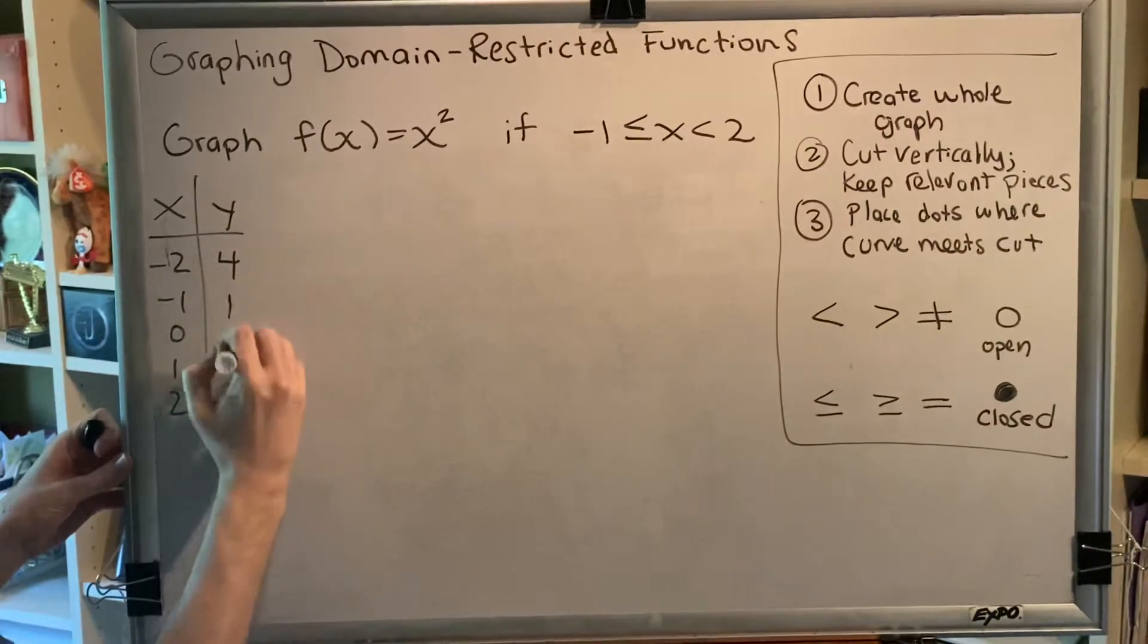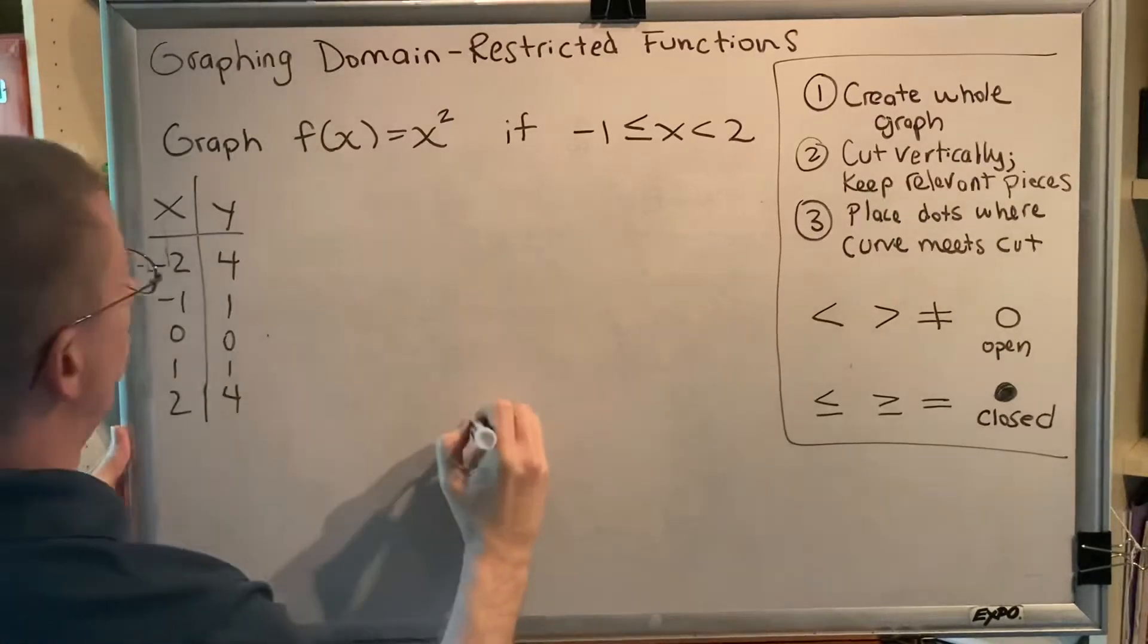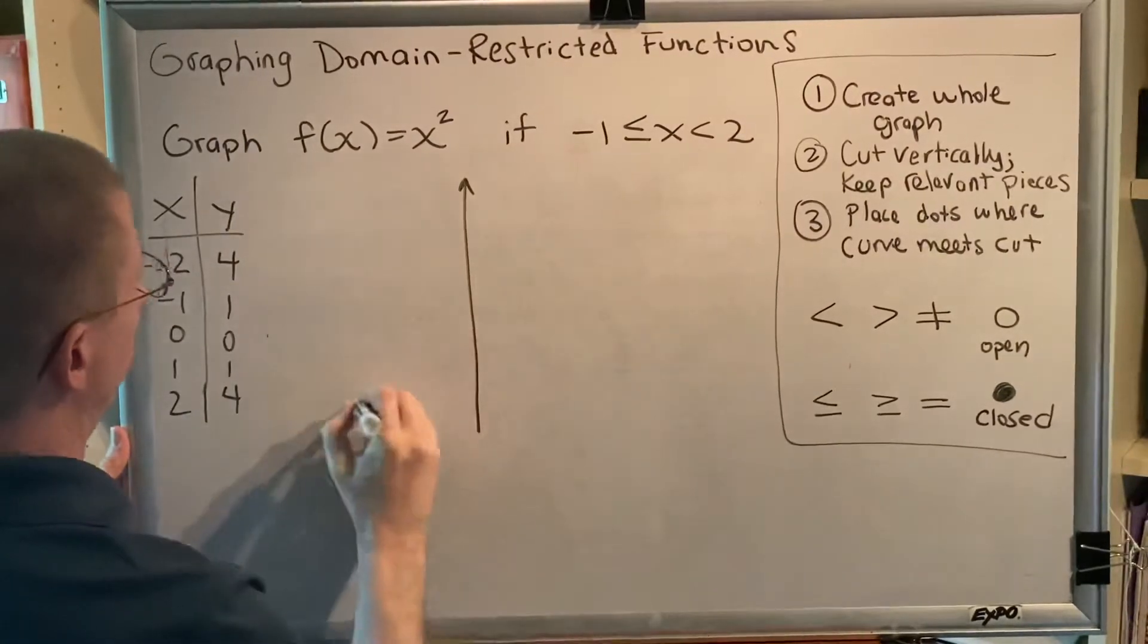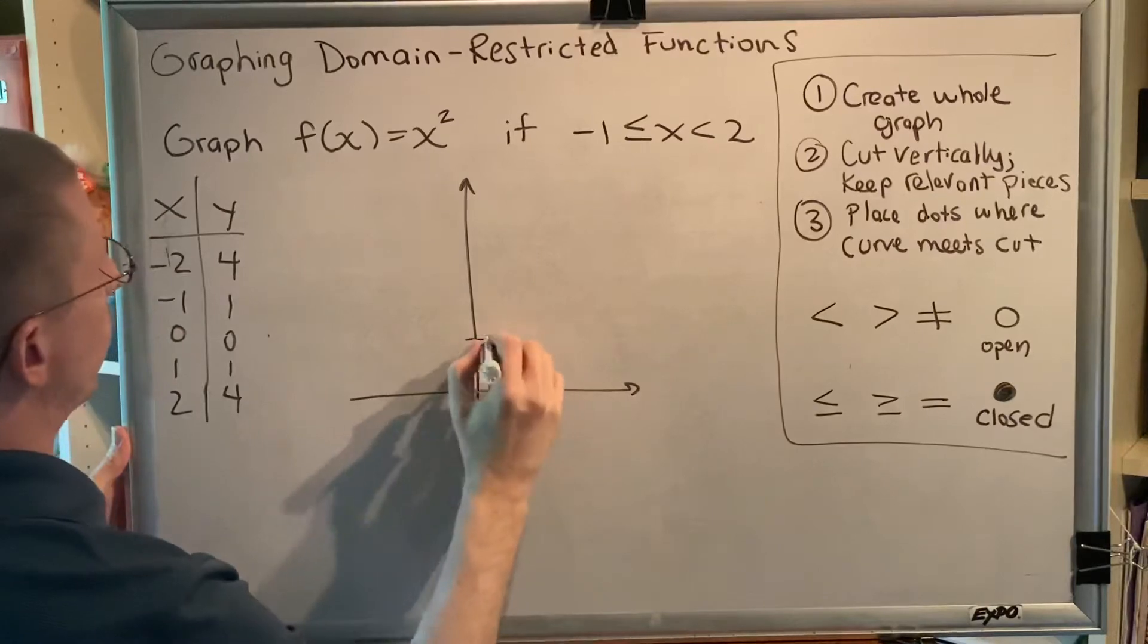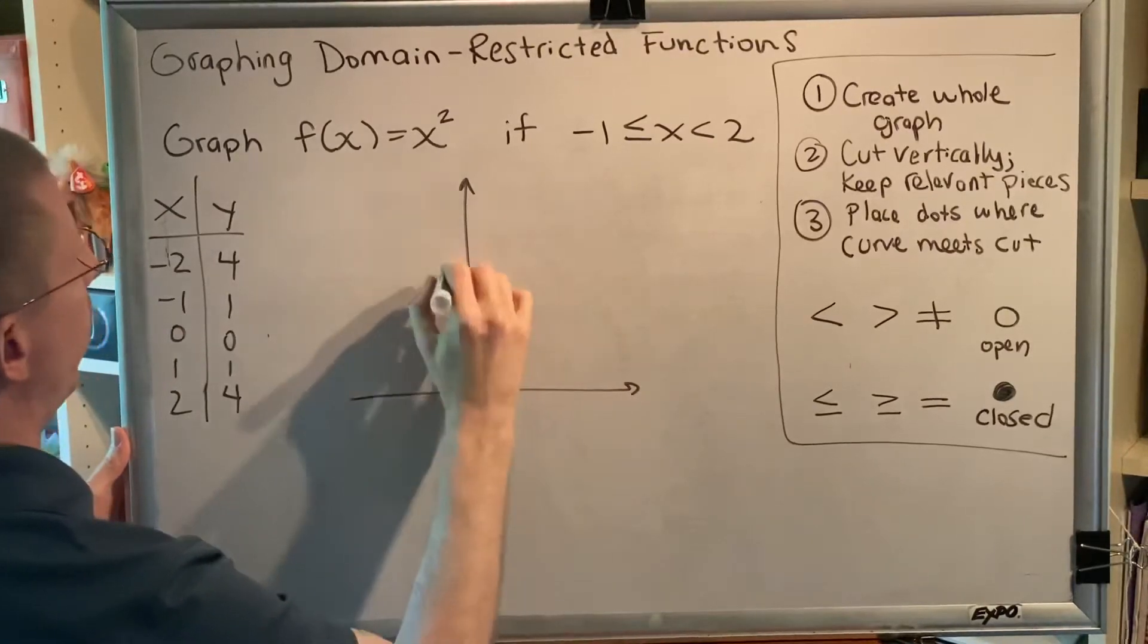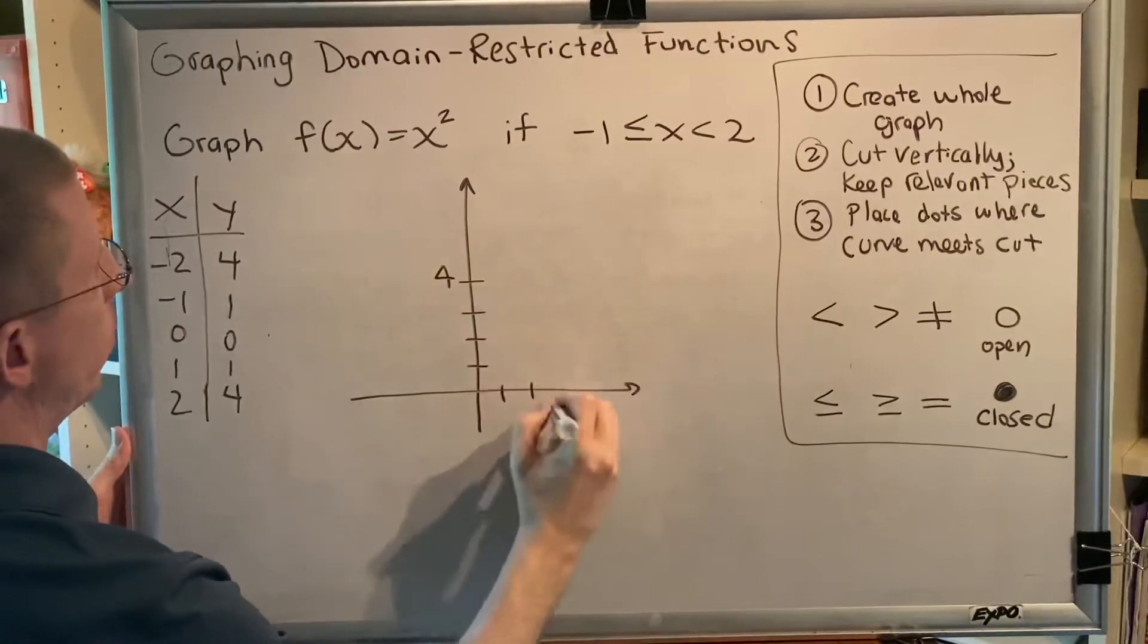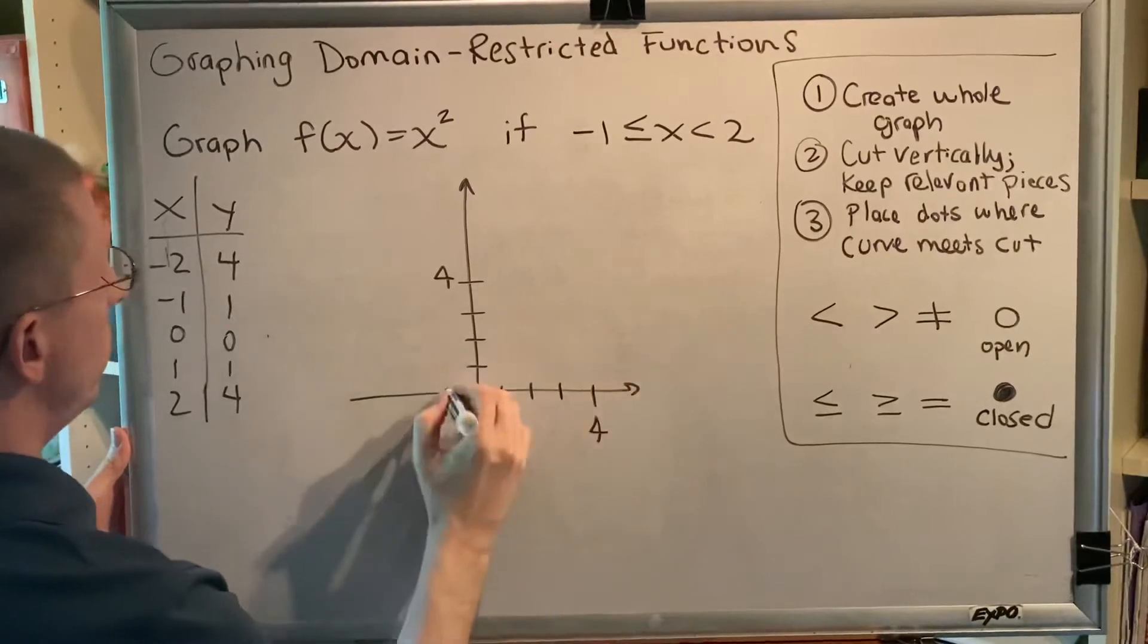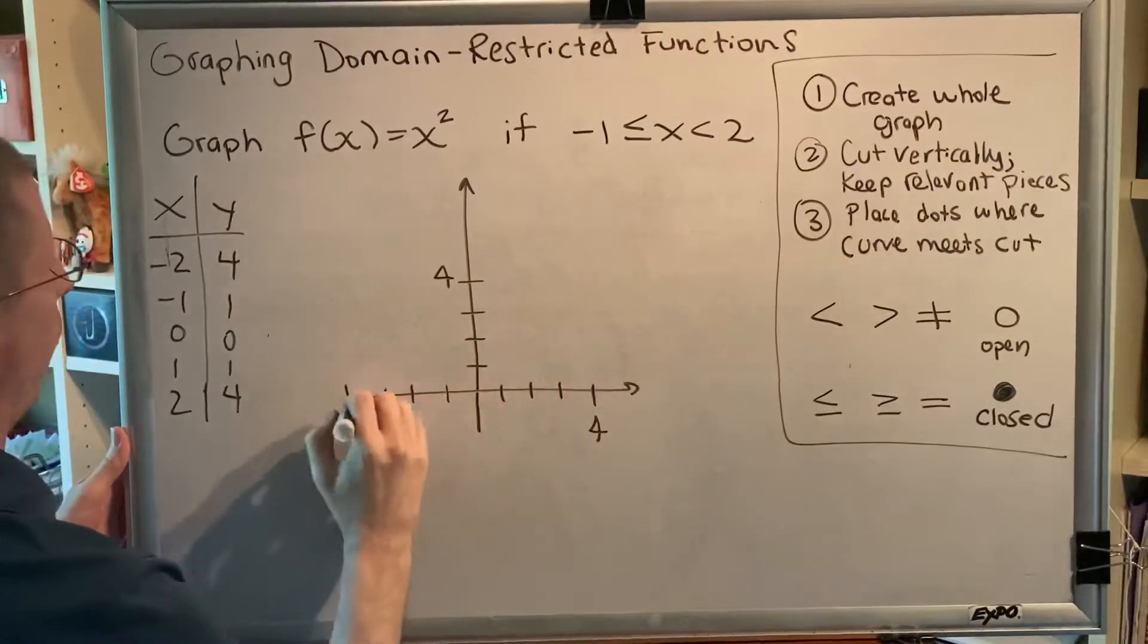So we get 4, 1, 0, 1, 4. Creating our picture. 0, 1, 2, 3, 4. 0, 1, 2, 3, 4. 0, 1, 2, 3, 4.